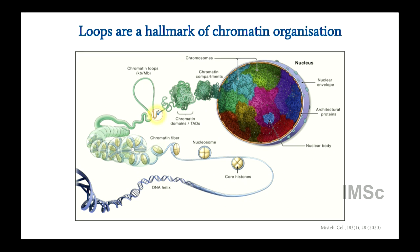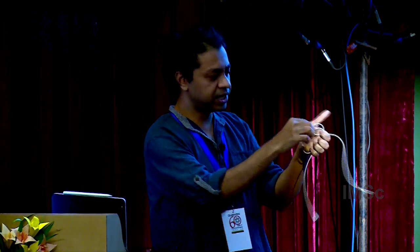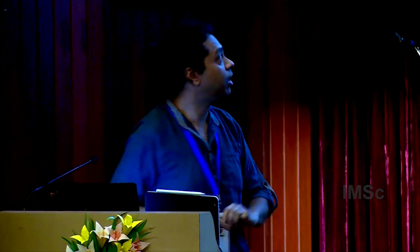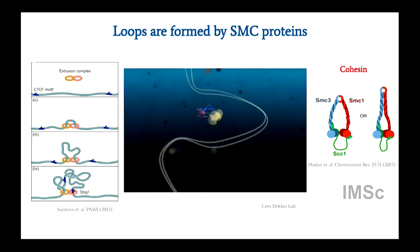TADs are regions where the chromatin polymer is highly crumpled — highly compact objects with many connections between distant parts of the DNA. These have some regulatory role. In the second part of the talk I'll discuss these topologically associated domains, and in the third part, if I get to it, I'll talk about chromatin compartments. That's the biology setup.